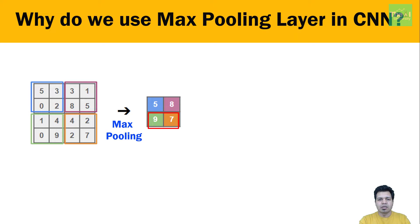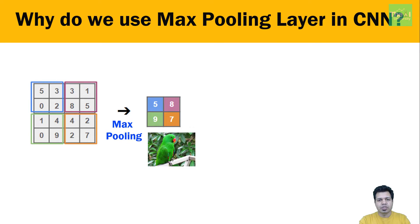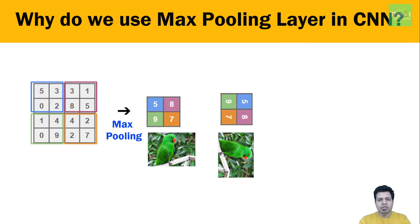By doing this we are still preserving the features. Max pooling helps extract the sharpest features of an image, which are the best lower-level representation. These largest values are the places where we find the closest similarity of the features. For example, if the parrot's red beak is represented by the value 8, and we rotate the image to change the orientation, that value 8 shifts to a new position — but since it's the maximum value, we still capture the red beak feature. So we are still able to preserve the feature.